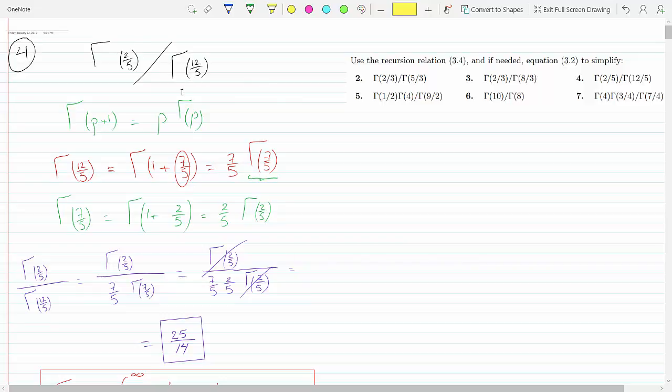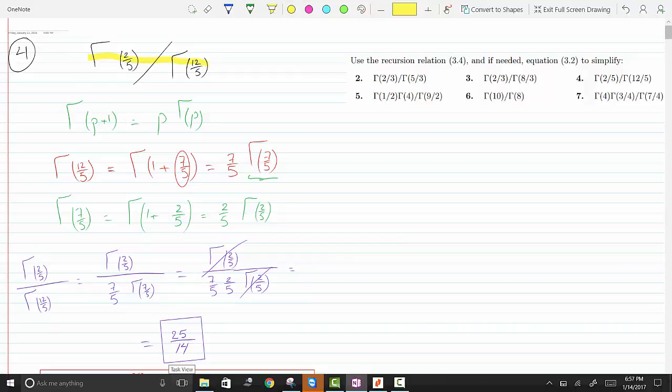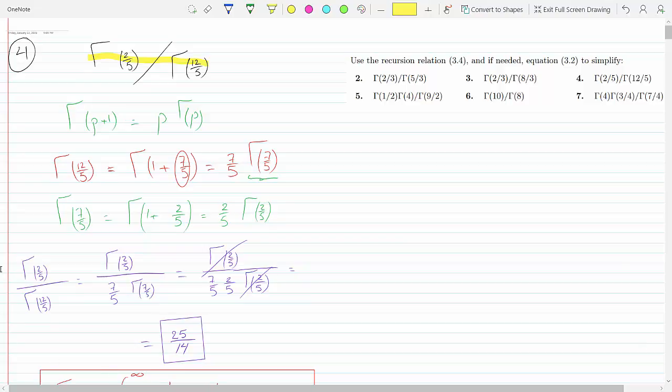It's actually a simple question. So I'm doing number 4, which I wrote right here. This is a very simple question, so I'm using recursion formula 3.4, which is this formula right here: gamma of P plus 1 is P gamma of P.